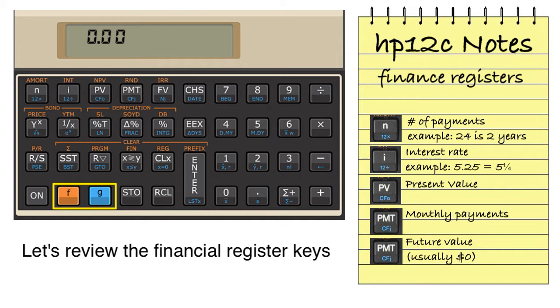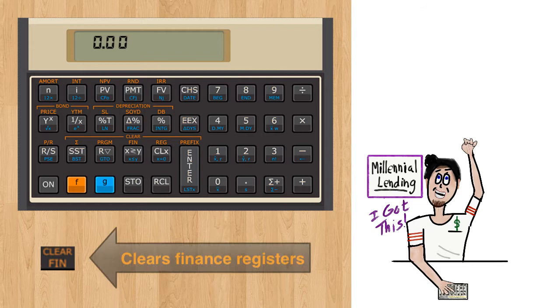When any four of the five parameters of the loan are entered, we can find the unknown fifth parameter. So here's scenario number one: finding a monthly payment for a loan. It's a good idea to begin any financial calculation by clearing the financial registers. Pressing the prefix F and XY exchange key will zero out the financial registers.